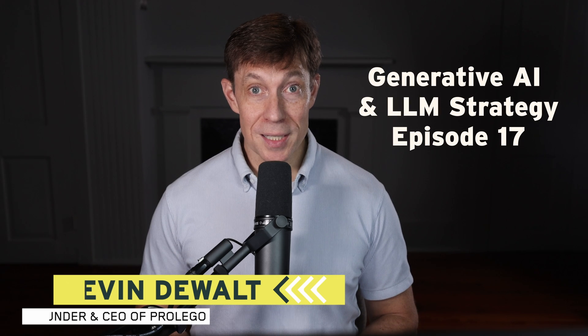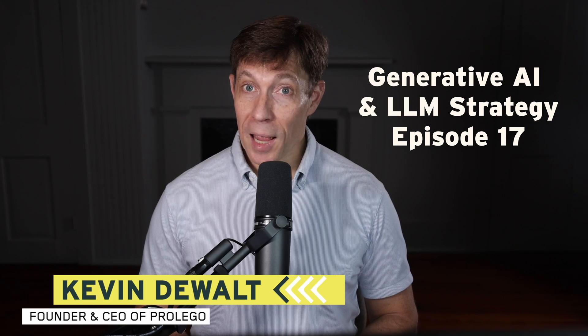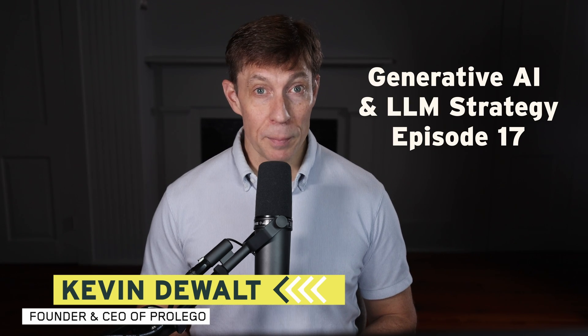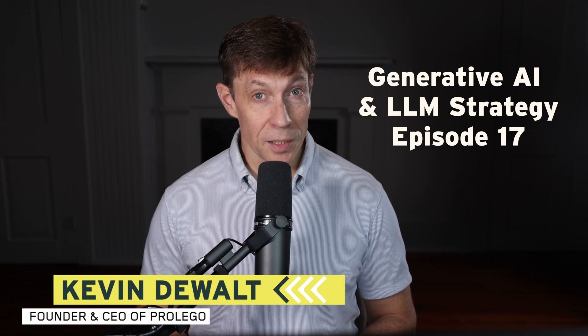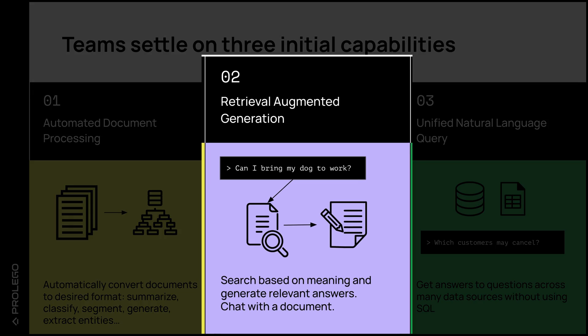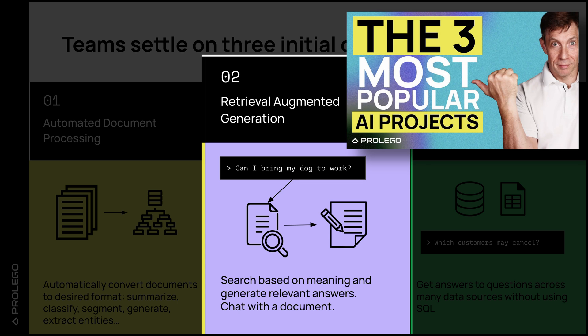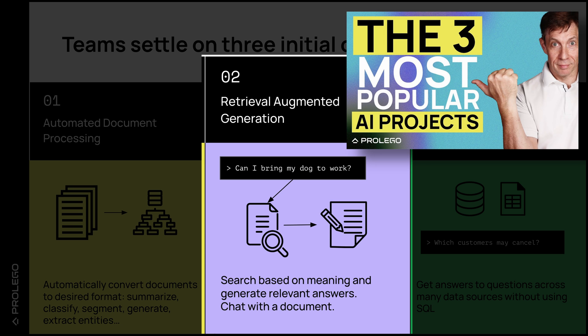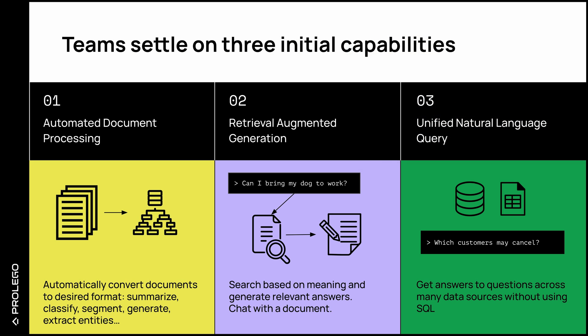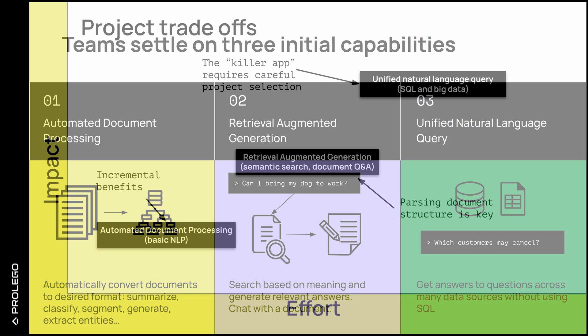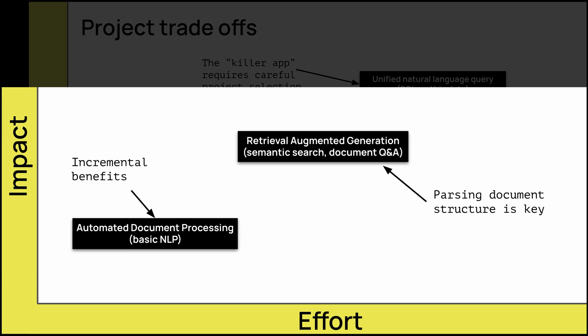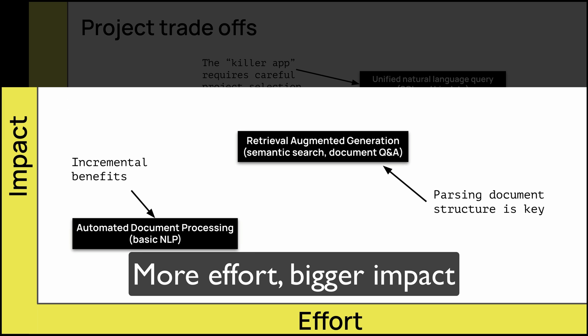Welcome to Episode 17. As I discussed in Episode 14, RAG is one of the three most popular applications of generative AI. While it is more difficult to implement than straightforward automated document processing, the impact can be significantly bigger.